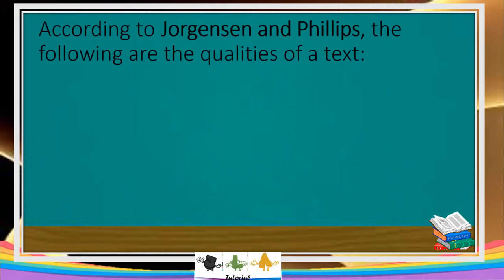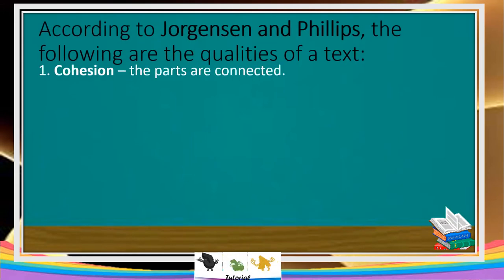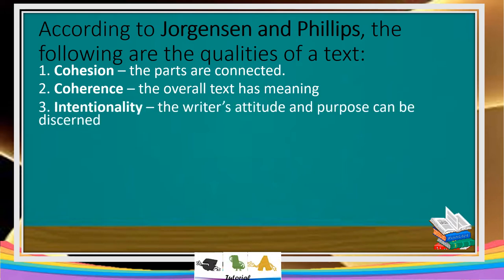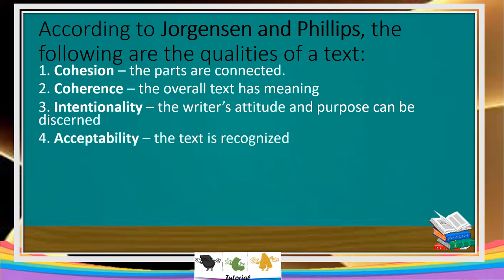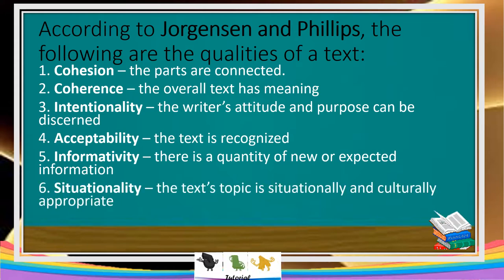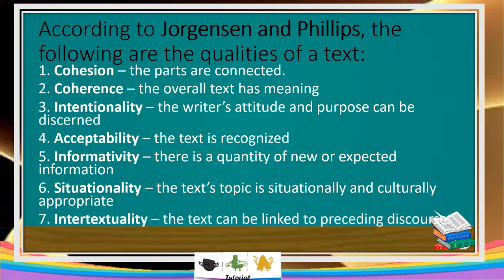According to Jurgenstein and Phillips, the following are the qualities of a text. Number 1 — Cohesion: the parts are connected. Number 2 — Coherence: the overall text is meaningful. Number 3 — Intentionality: the writer's attitude and purpose can be discerned. Number 4 — Acceptability: the text is recognized. Number 5 — Informativity: there is a quantity of new or expected information. Number 6 — Situationality: the text topic is situationally and culturally appropriate. Number 7 — Intertextuality: meaning the text can be linked to preceding discourse.